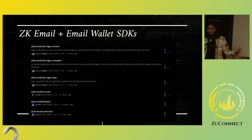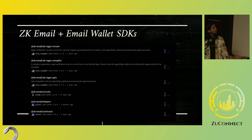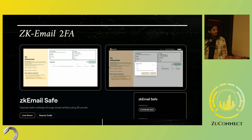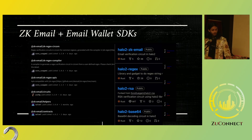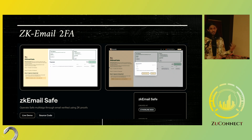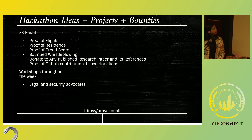We're excited about what people can build with this. We've open-sourced all of our code and SDKs — they're on NPM, and we have Circom proofs as well as JavaScript helpers. If you want super-fast client-side proofs, we also have a Halo 2 library. These SDKs are really powerful; for instance, people built a ZK email safe which allows you to do 2FA on your Ethereum account with your email address in one weekend.